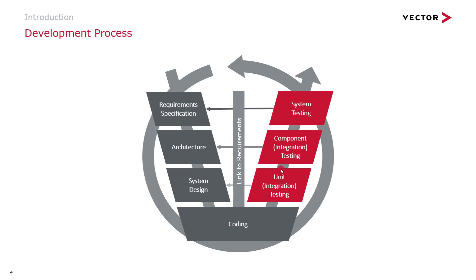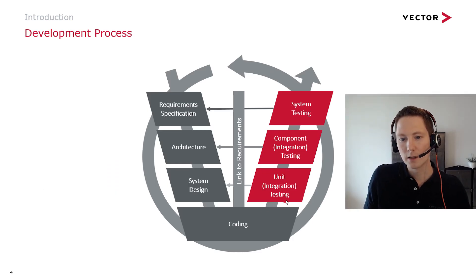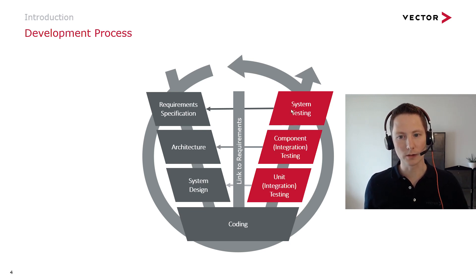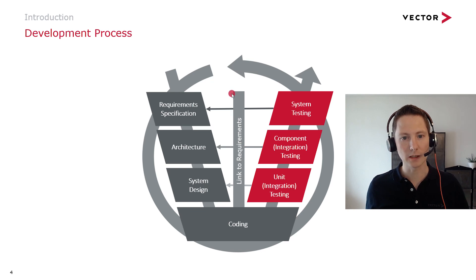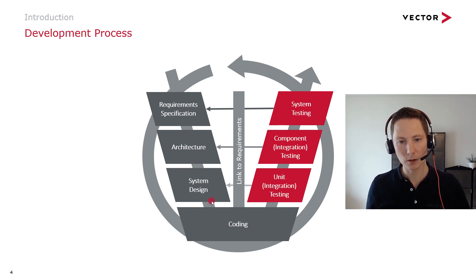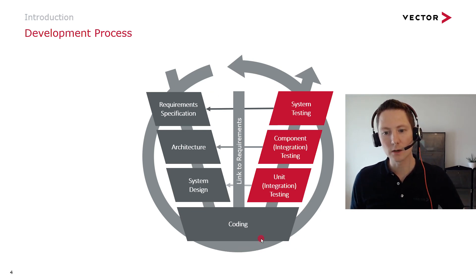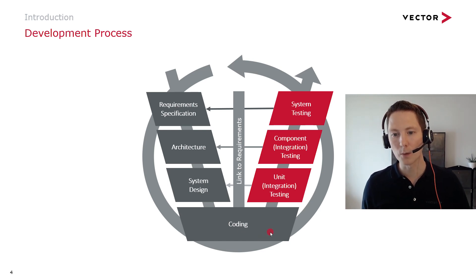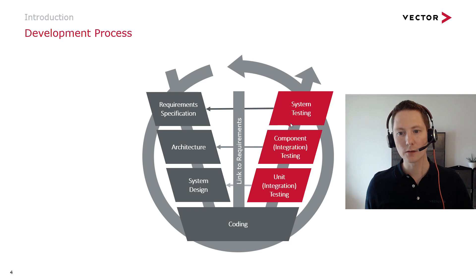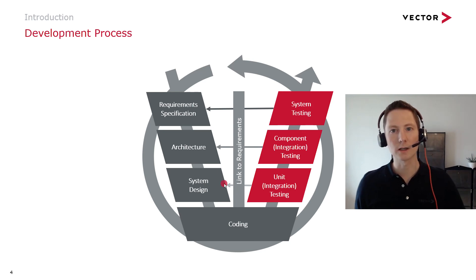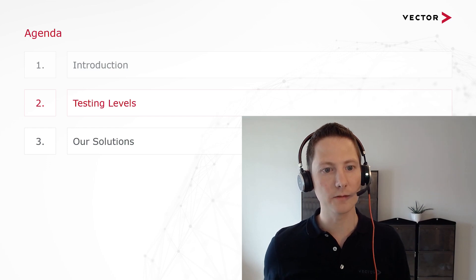To test embedded software I would like to talk about the different test phases: unit tests, component tests, and system tests. To bring that into context, I would like to show you the traditional development process — the V-Model. On the left side we have the requirement specification, the architecture of our software, and the system design. These are all preconditions before we start coding. Once we start coding, we can directly start with unit testing, then go over to component testing and system testing. Each of the test phases are linked to requirements on the left side of the V-Model.